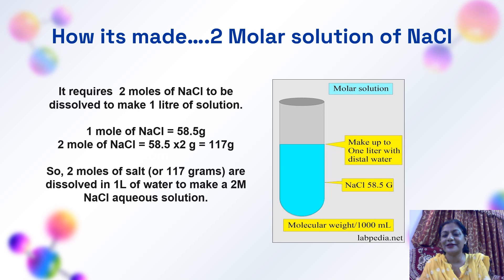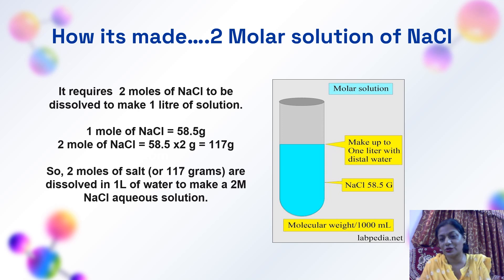Another problem: how to make a 2 molar solution of NaCl. 1 mole of NaCl contains 23 grams of sodium and 35.5 grams of chloride, which comes out to be 58.5 grams of sodium chloride. So 2 moles of NaCl will have a mass of 117 grams. We will dissolve 117 grams in 1 liter of water to make a 2 molar NaCl solution.